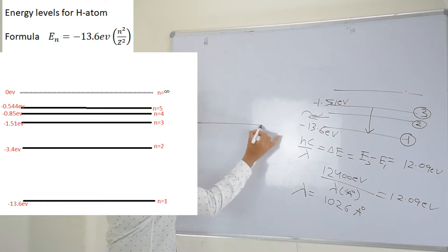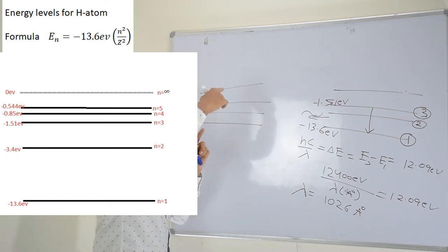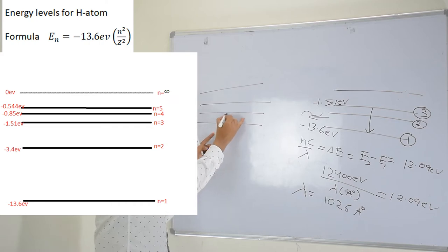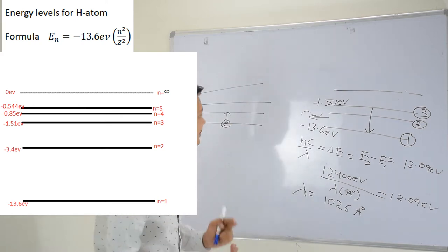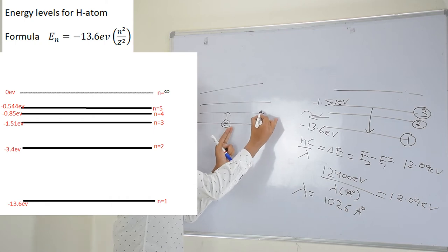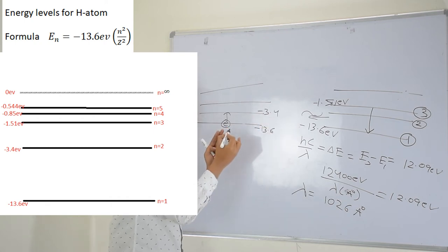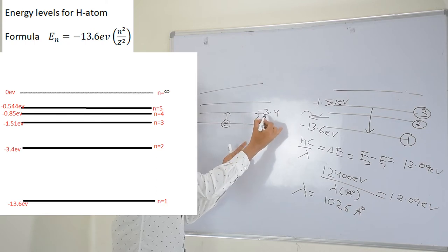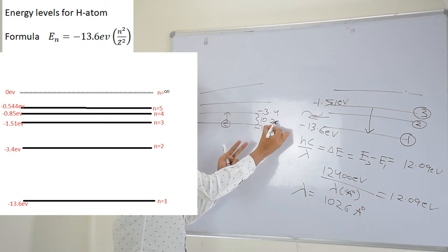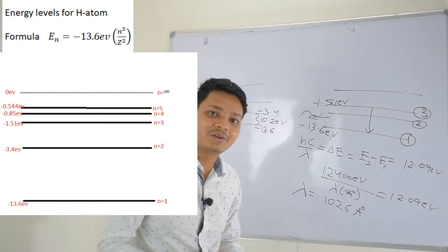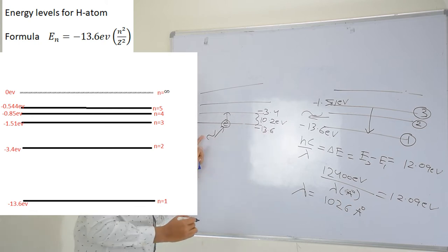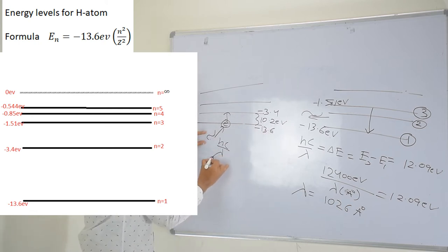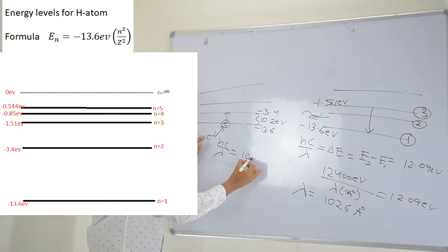Similarly, if an electron jumps from a lower state to a higher state, then energy is required — it will absorb energy. How much energy is required? Here energy is minus 13.6 eV and here energy is minus 3.4 eV. So the difference in energy, this minus this, is 10.2 electron volts. This much energy is required to jump from here to here. Let's say a photon collides with the electron giving this much energy, so the energy of this photon is 10.2 eV.